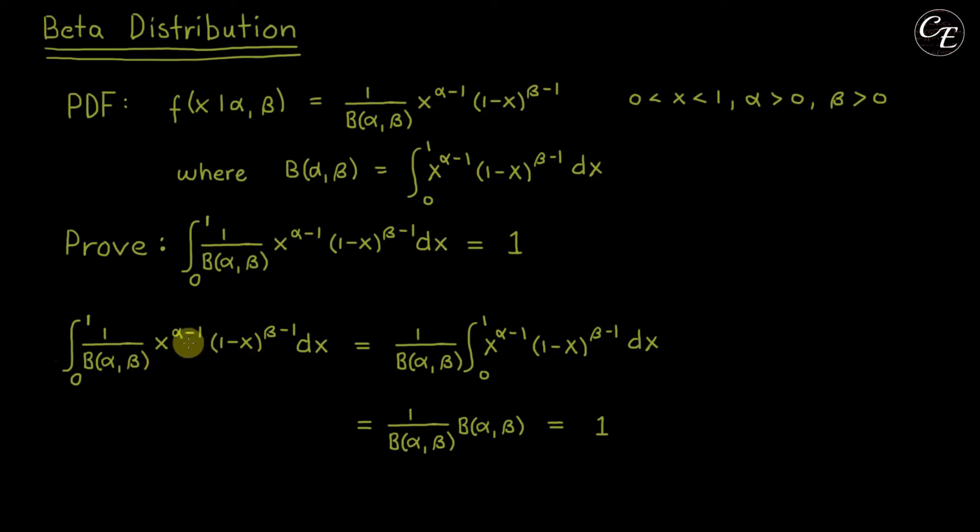Then for the remaining terms which is this one, this integral expression is same with this one which is big beta of alpha beta. Then we can replace this one by this one. So we have this one from here.